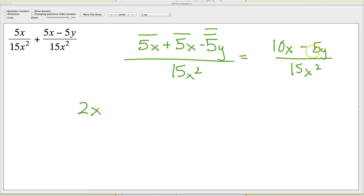But in this case, they all have five in them. So I'm just going to reduce them all by five. So ten divided by five is two. So I'm going to put two x. Five divided by five is one. So minus y. And then fifteen x squared. Well, fifteen divided by five is three. So I end up with three x squared. So two x minus y over three x squared. It's pretty simple.